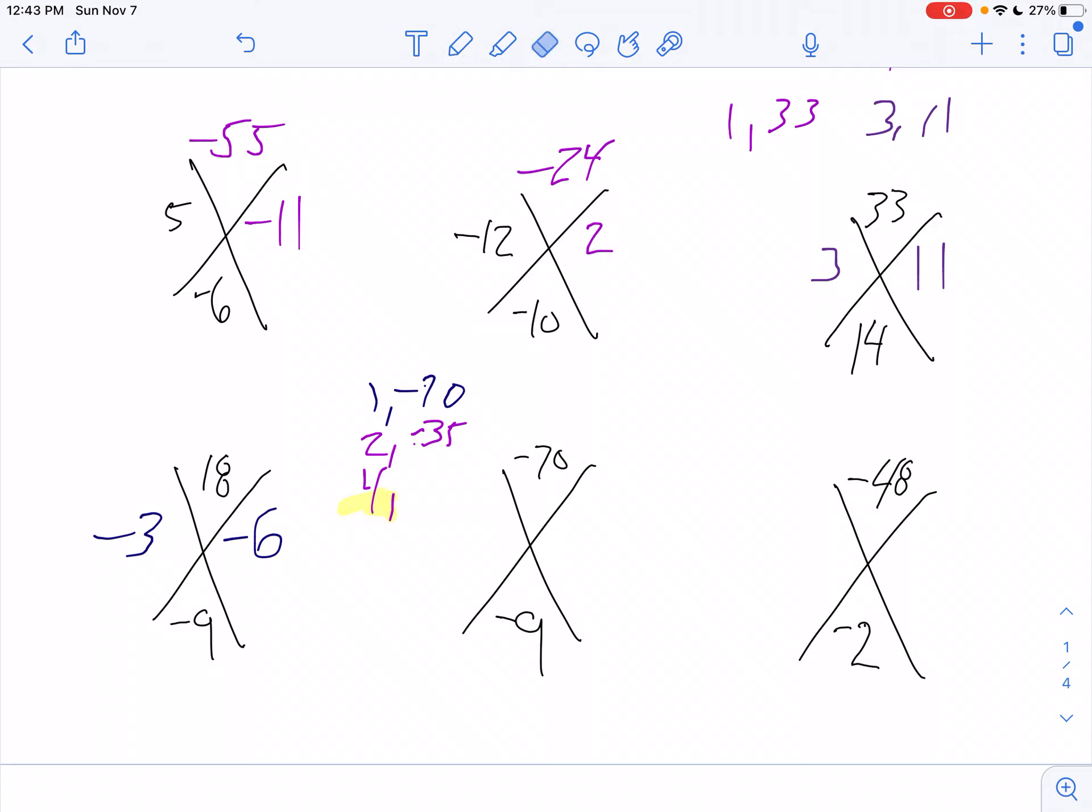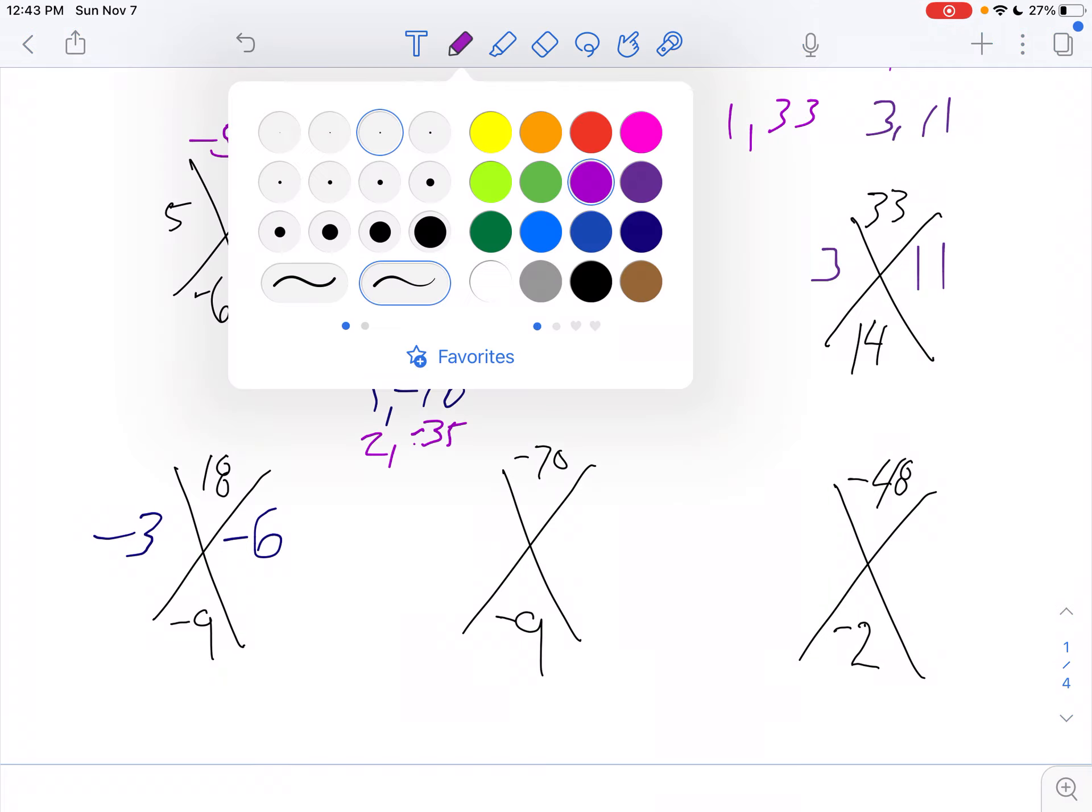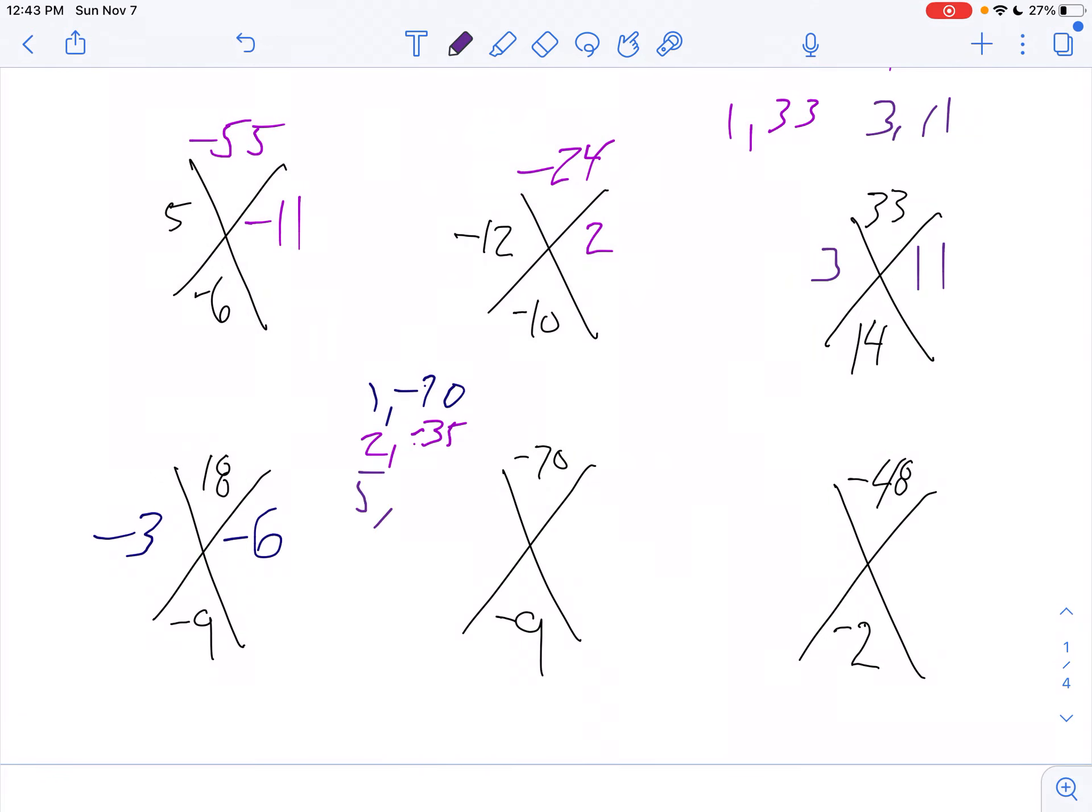Let's try 5. Oops. I'll highlight that and delete that. So, I'll try 5 and negative 14. Oh, there we have it. 5 and negative 14 because 5 plus negative 14 is negative 9. And 5 times negative 14 is negative 70.